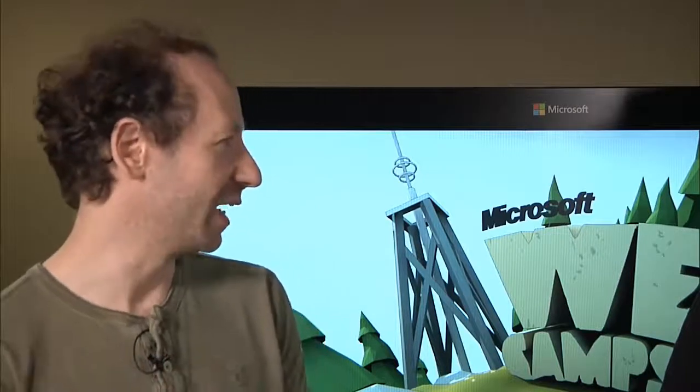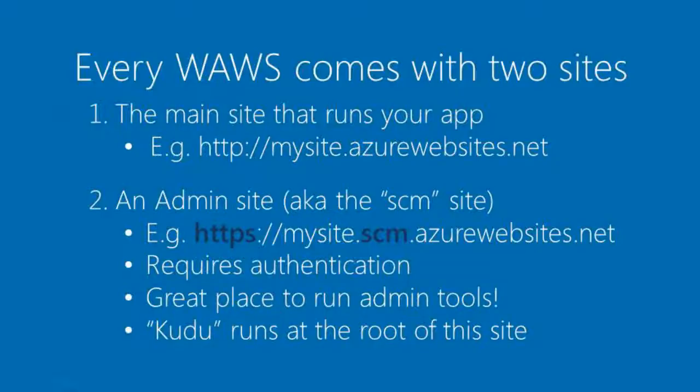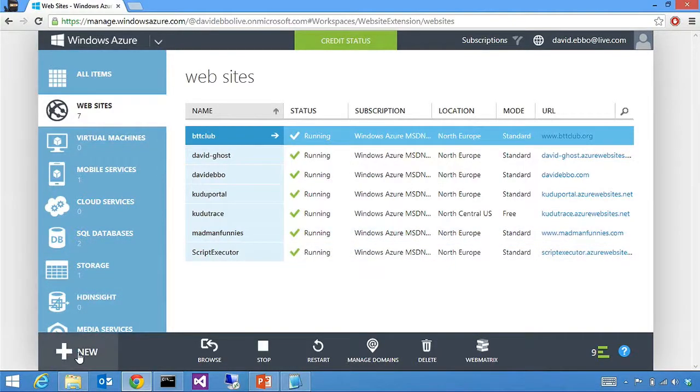So tell us a little bit more about the Site Extensions. Site Extensions are basically a way to add functionality to the admin site. Let me back out a little — I have a couple of slides that explain some basics. When you create an Azure Website, you can run this website under a URL with the shape mysite.azurewebsites.net. But along with this site there's always a second site that comes along, which we call the SCM site. It's pretty much the same URL except with an extra SCM segment and the protocol is always HTTPS.